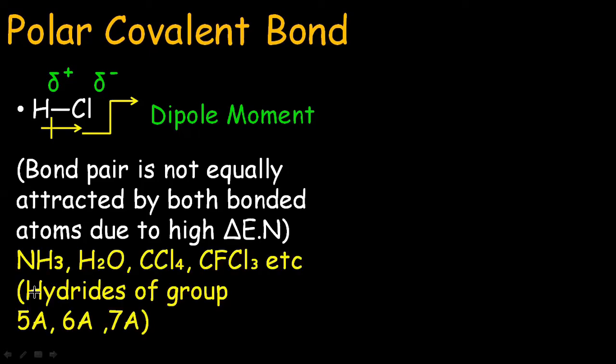The molecules having the polar covalent bonds are NH3, water, carbon tetrachloride, CFCl3, and the hydrides of group 5A, 6A and 7A.